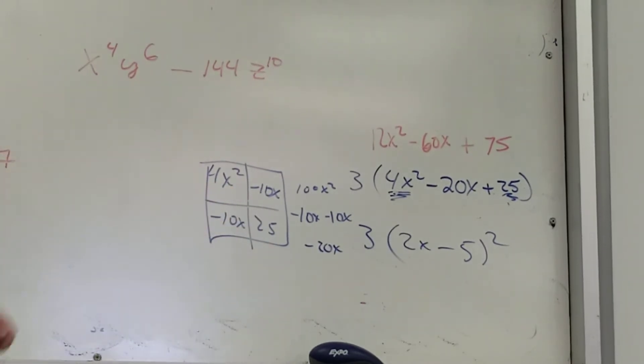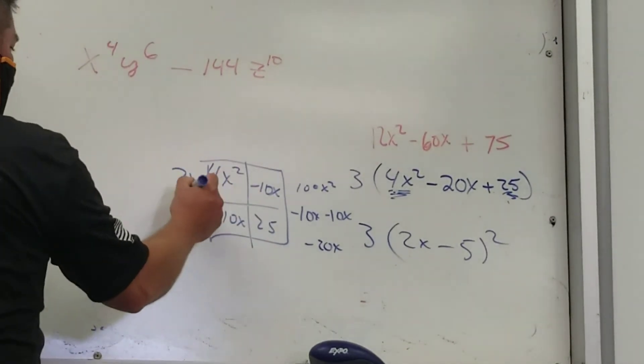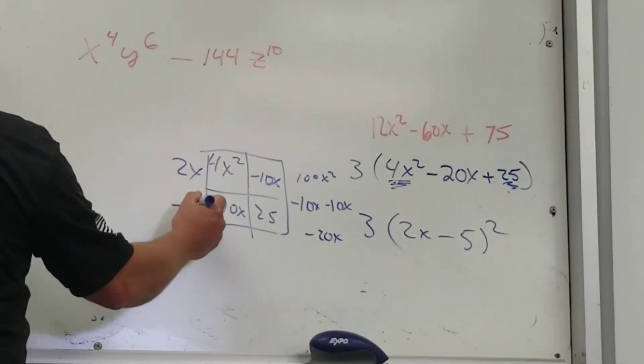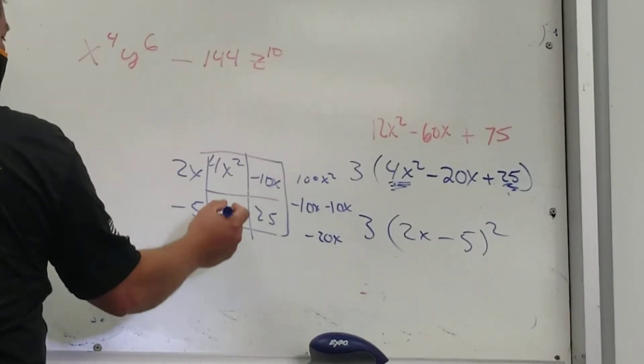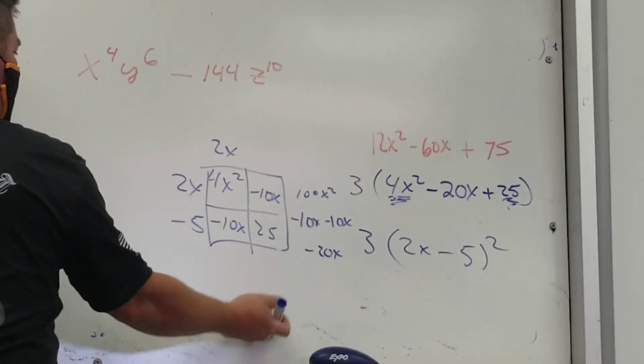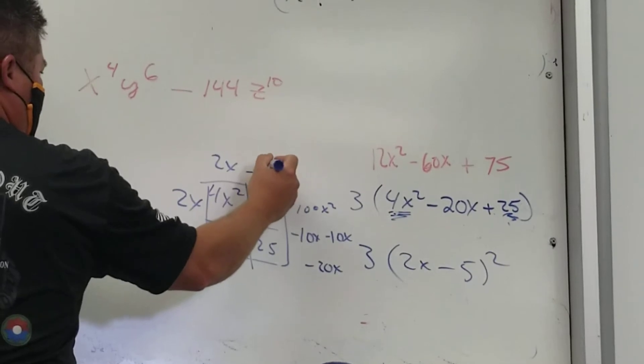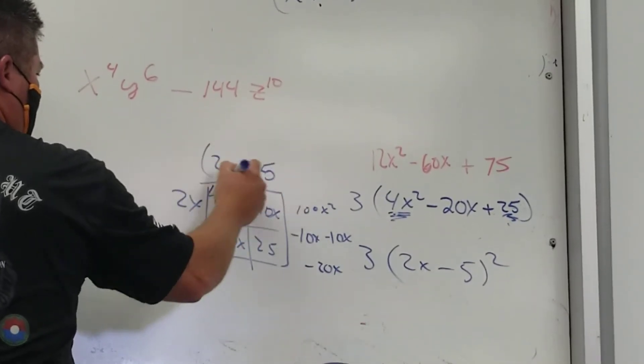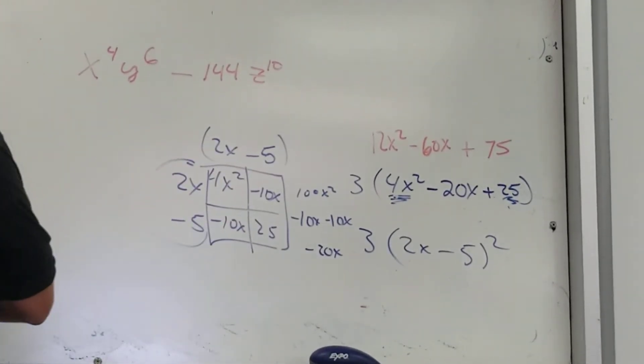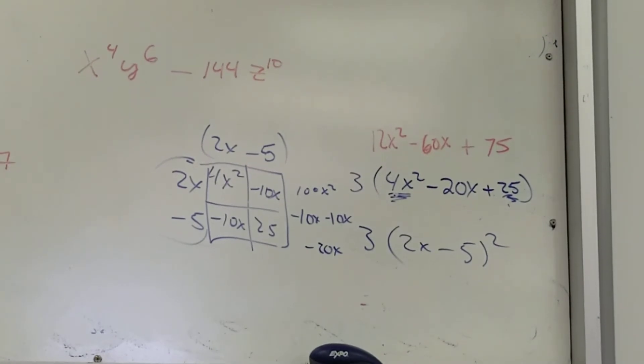Factor out the common factor. What is it? 2x. What's the common factor here? Negative 5. Factor straight up. 2x. Factor straight up. Negative 5. Same thing, isn't it? 2x minus 5 squared.